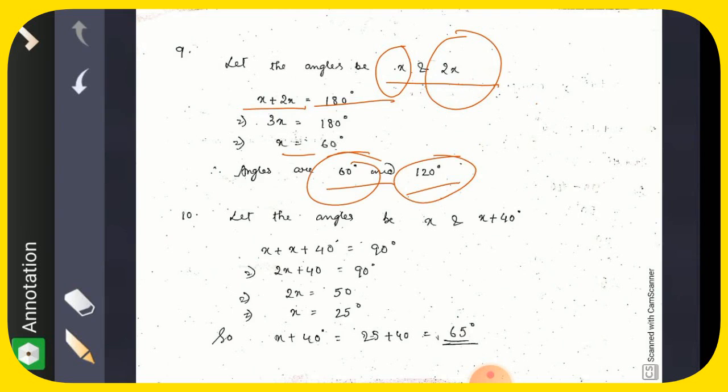Now number 10: find the measure of an angle that is 40 degrees more than its complement. One angle is x, another angle is x plus 40, and these are complement to each other. So x plus x plus 40 equals 90 degrees. 2x plus 40 is 90, 2x is 50, x equals 25.